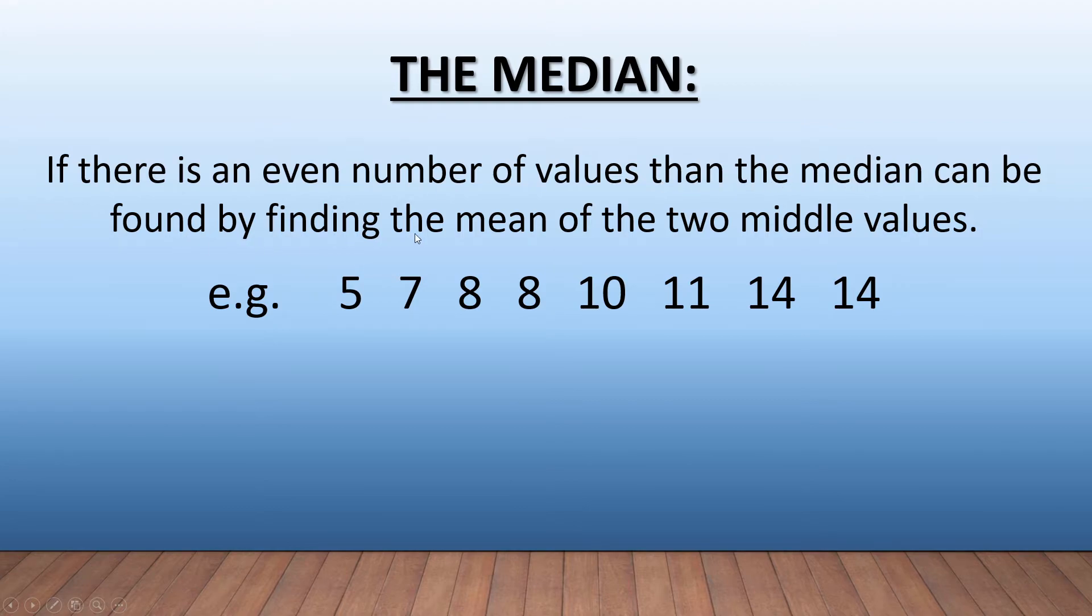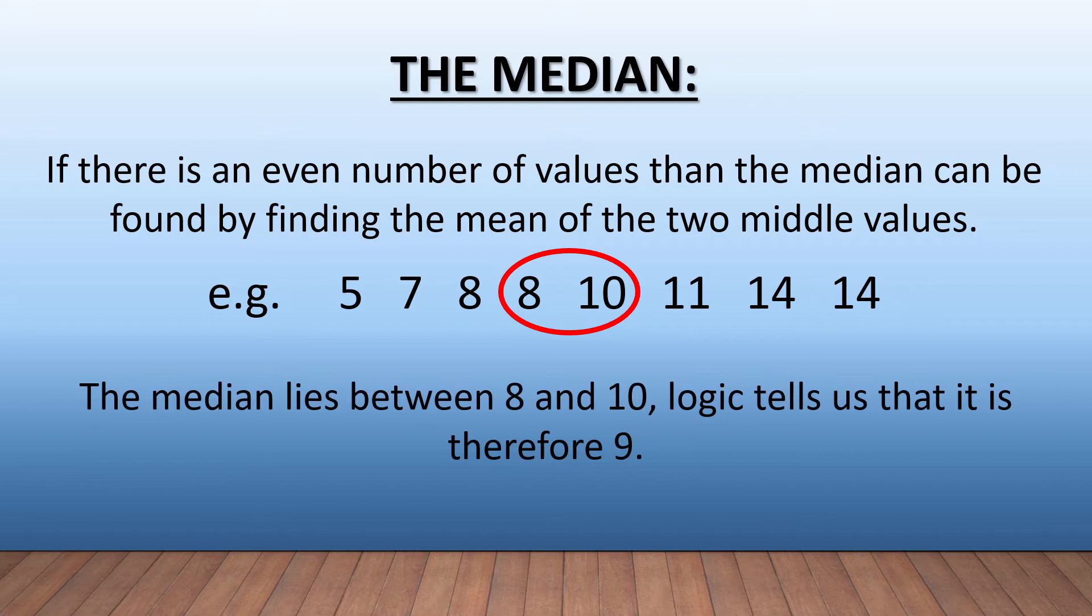So one, two, three, four; one, two, three, four—it'll be 8 and 10. We now have to find the mean of those two values. The median lies between 8 and 10, and logic tells us that this is therefore 9.